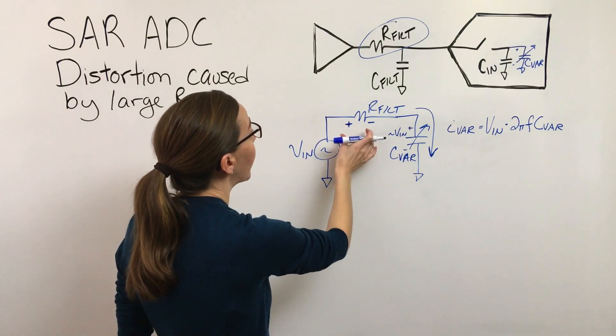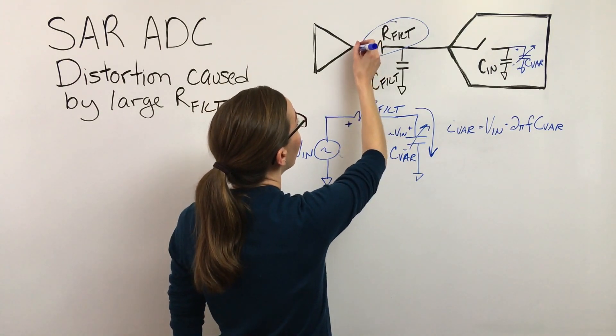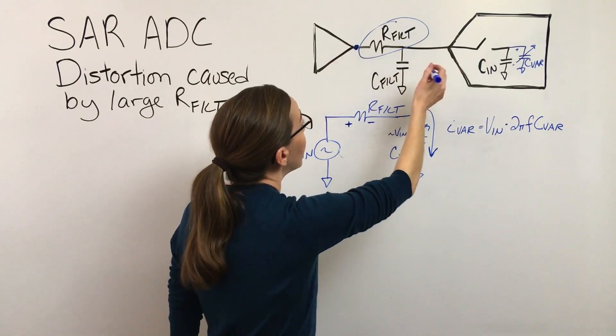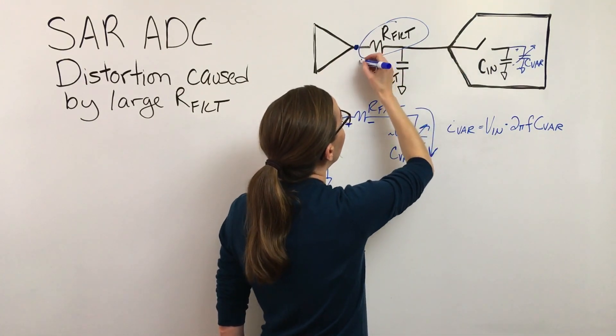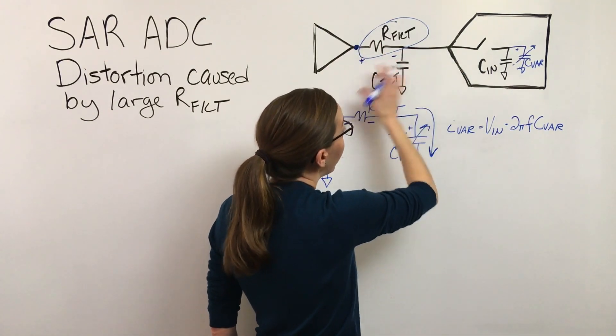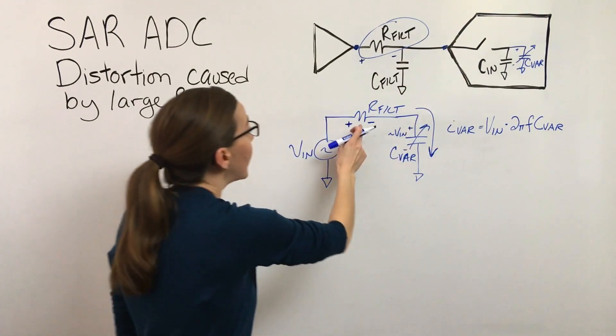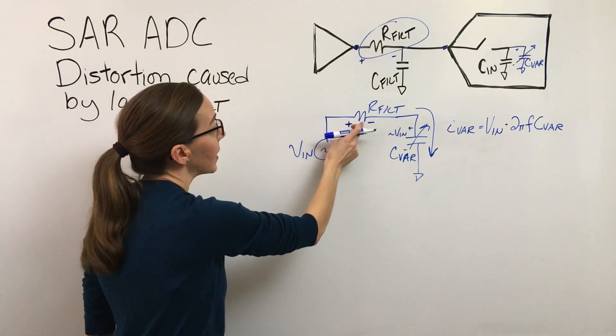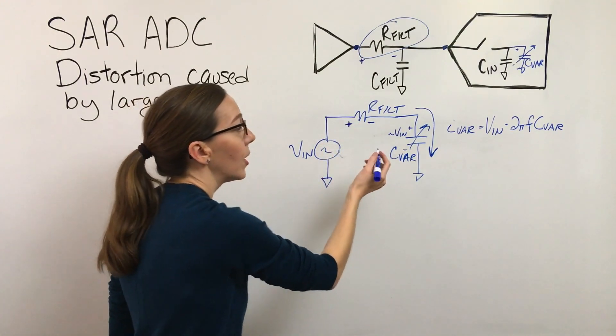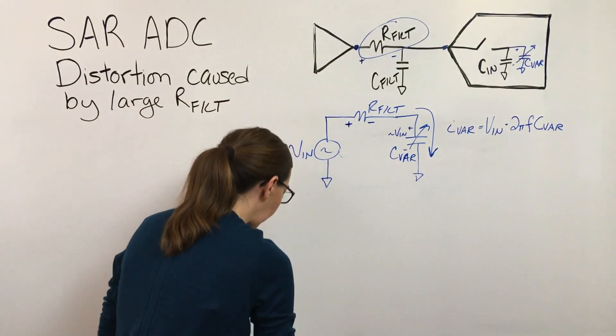Because it's this voltage drop which is changing in a non-linear fashion that's contributing to the error. We're trying to drive a voltage to this ADC but we're actually losing a variable part of that voltage before it gets there. And so this is our distortion mechanism—it's this voltage change.